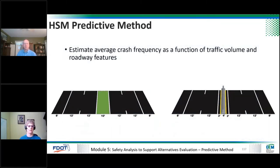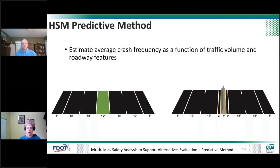At the end of the day, the predictive method — which is Part C of the Highway Safety Manual — lets you estimate average crash frequency for facilities as a function of traffic volume and roadway features. For example, you could take two cross sections, estimate safety performance under option one and option two, compare and contrast safety performance, and use safety as an evaluation criterion alongside traffic operations, noise, and all the other normal considerations. You're estimating average crash frequency per year using ADT and roadway features.